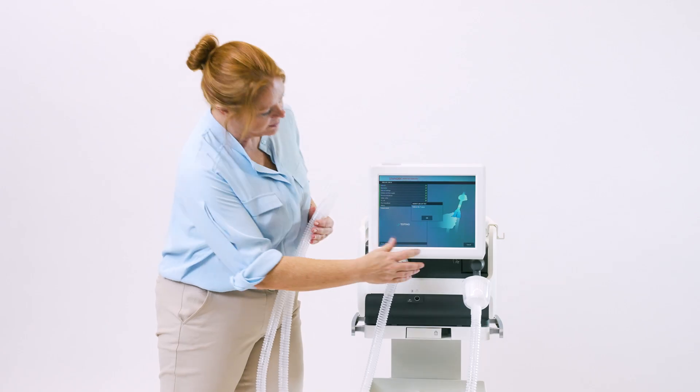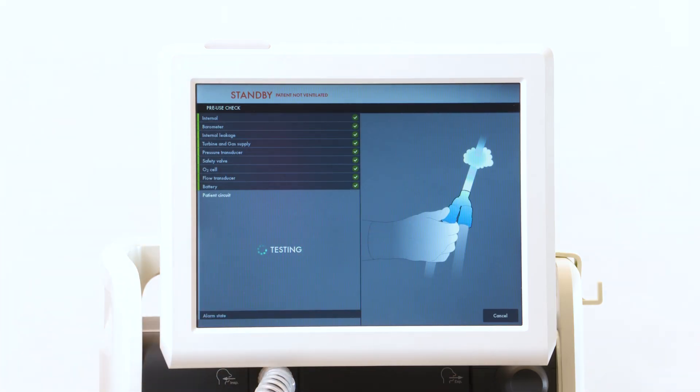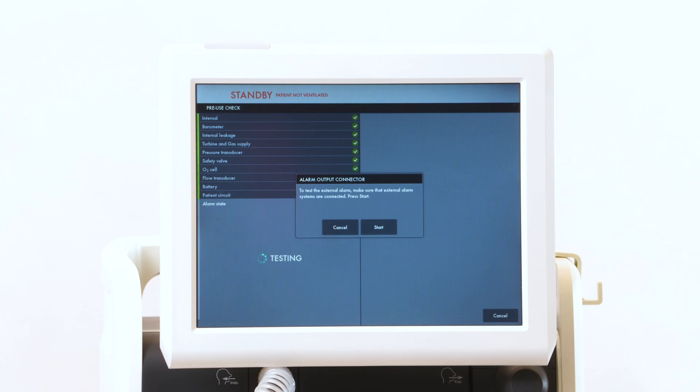Unblock the tube and press OK. Your pre-use check is then complete.